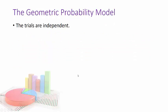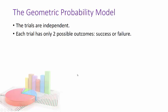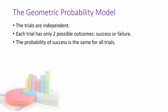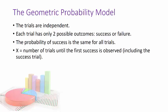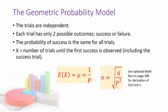The geometric probability model has important conditions: trials must be independent, each trial has only two possible outcomes (success or failure), the probability of success is the same for all trials, and X represents the number of trials until the very first success is observed. The expected value (mu) is 1 over P — 1 divided by the probability of success. There is a derivation for this and for standard deviation on page 388.